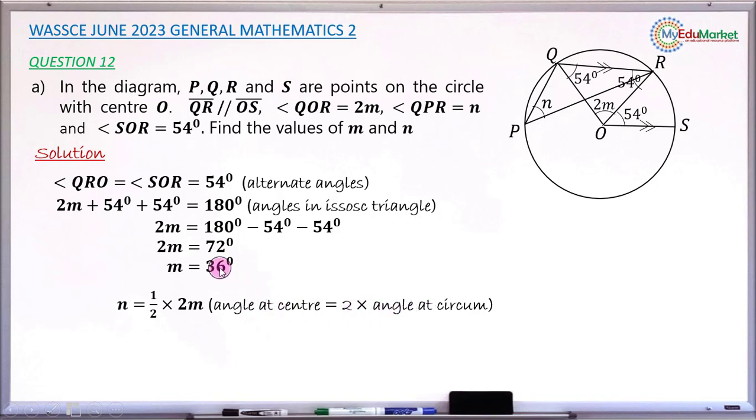I have my angle M as 36. So 2M will now be 2 times 36. So I now have 72. So angle N will now be half of 72. And half of 72 is also going to be 36 degrees. So this is the size or the value of N. And this answered the two questions.